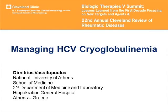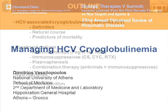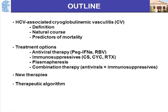What I'm going to do is discuss a few things about vasculitis associated with Hepatitis C virus. What is its natural course? What are the predictors of mortality? What are the current treatment options regarding antiviral therapy and immunosuppressive therapy? What are the new therapies that are coming on? And at the end we'll have a therapeutic algorithm for this disease.